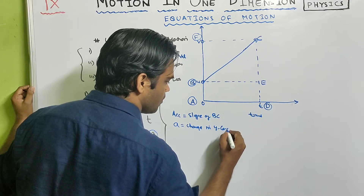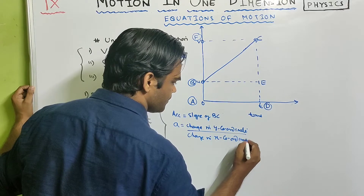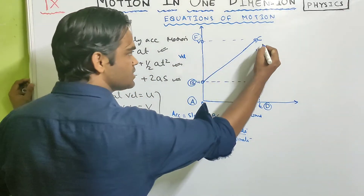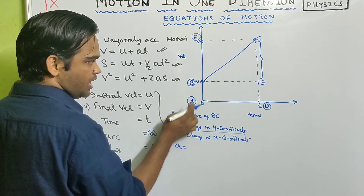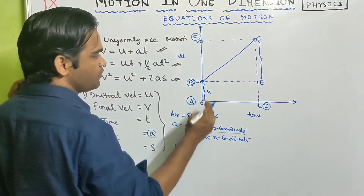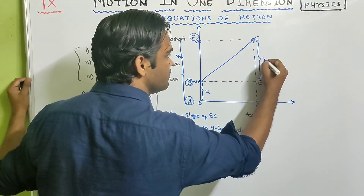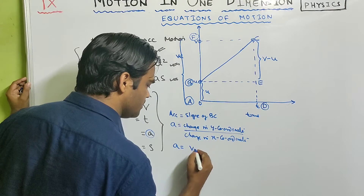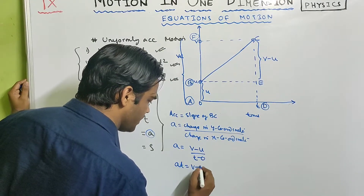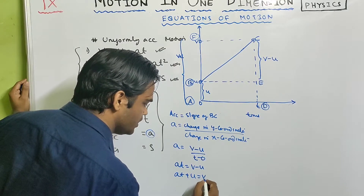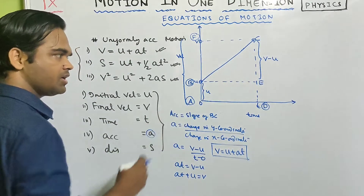Change in y coordinate divided by change in x coordinate. AF is v, AB is u, so BF will be v minus u. Change in y coordinate is v minus u; change in x coordinate is t. So a equals (v minus u) divided by t, which gives at equals v minus u, meaning v equals u plus at. That is the first equation of motion derived by the concept of slope.